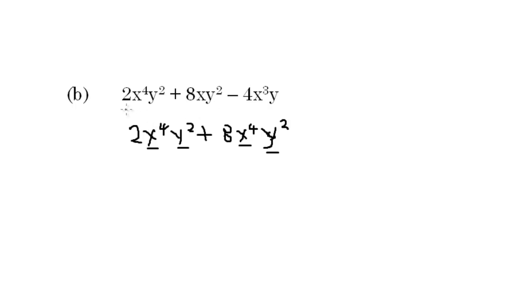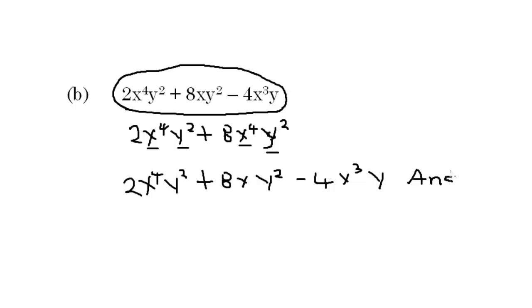But in the case of this equation, all the terms are different. And since all the terms are different, we cannot add or subtract any of the terms. Now the solution is just simply the equation. That is 2x to the 4th y squared plus 8xy squared minus 4x cubed y. That is our solution because we cannot add any of the terms in the equation because they are all different or subtract them.